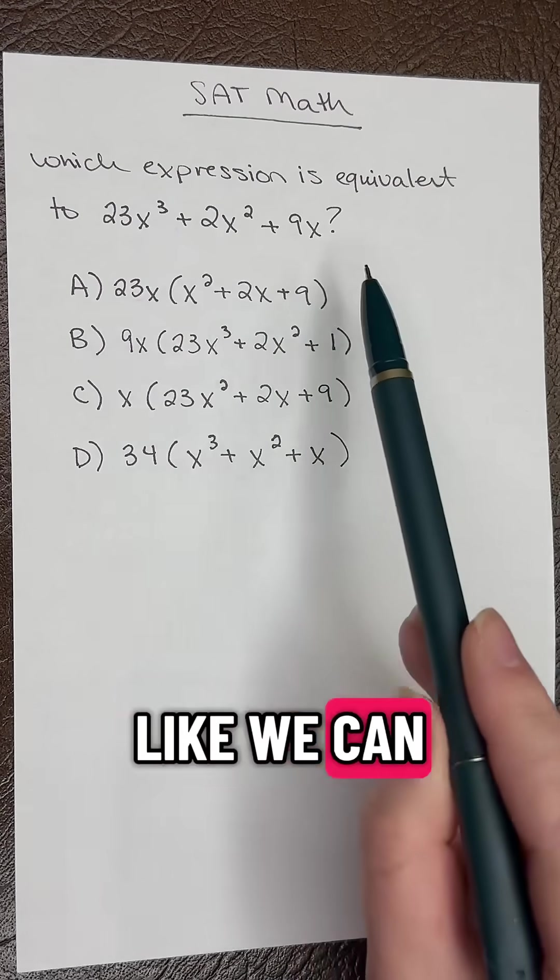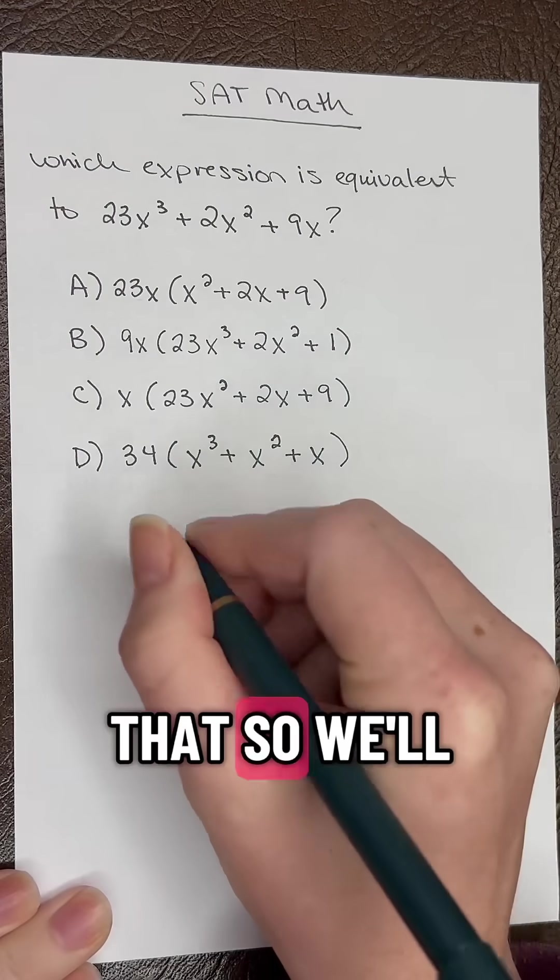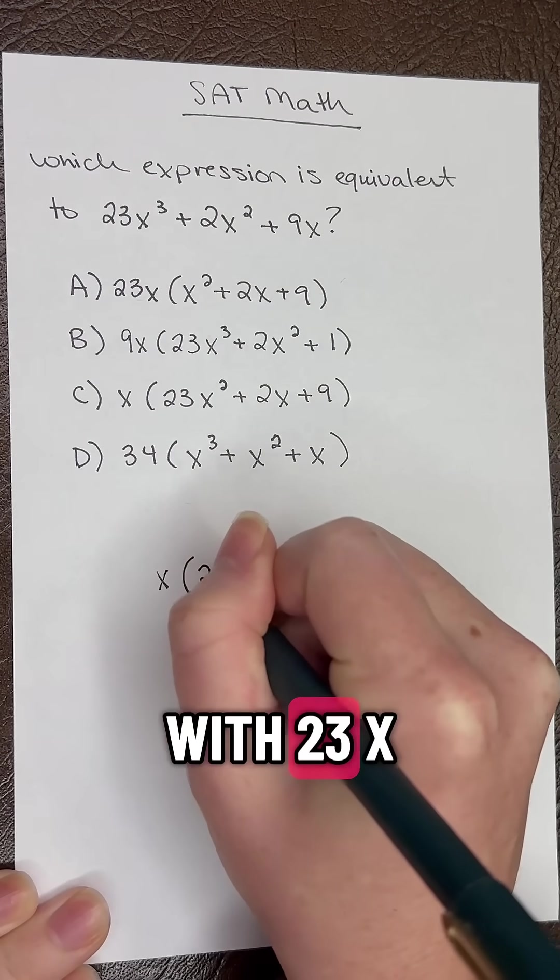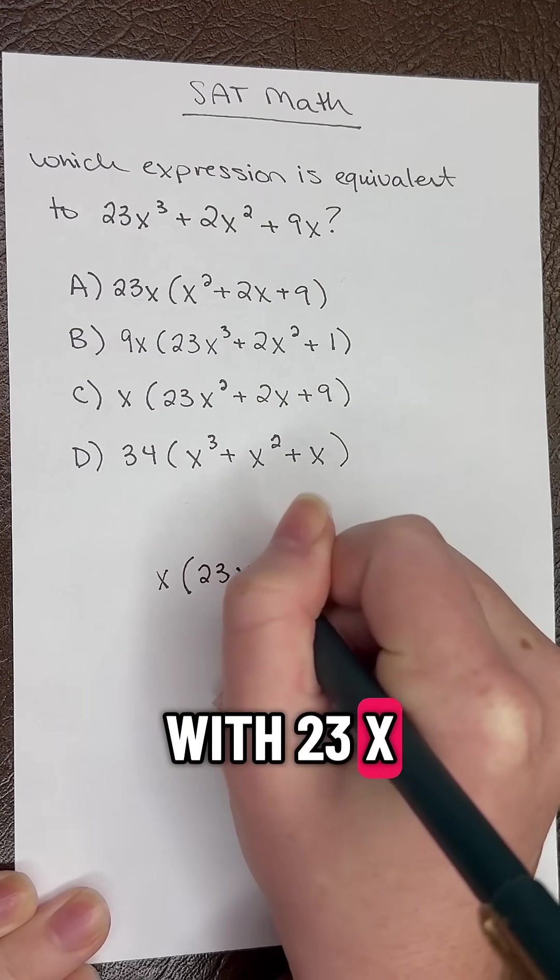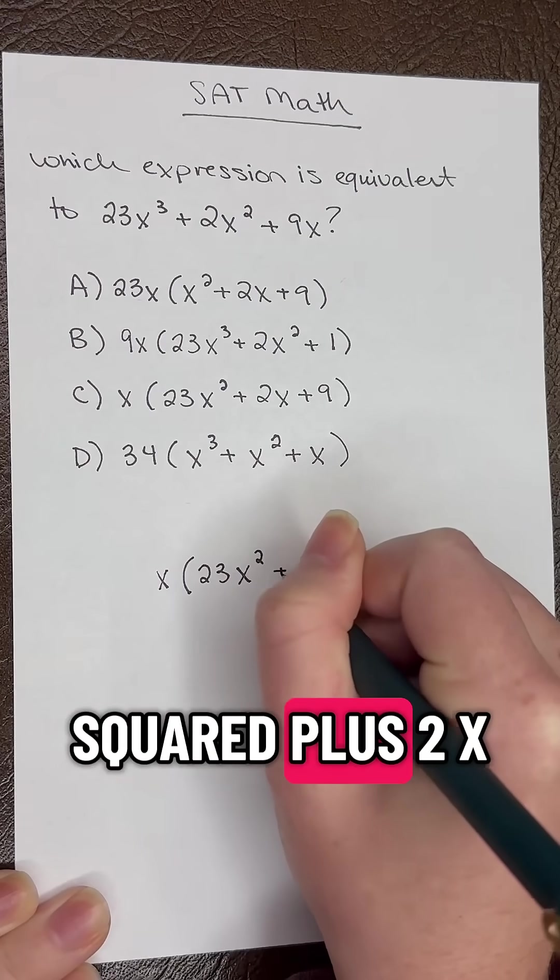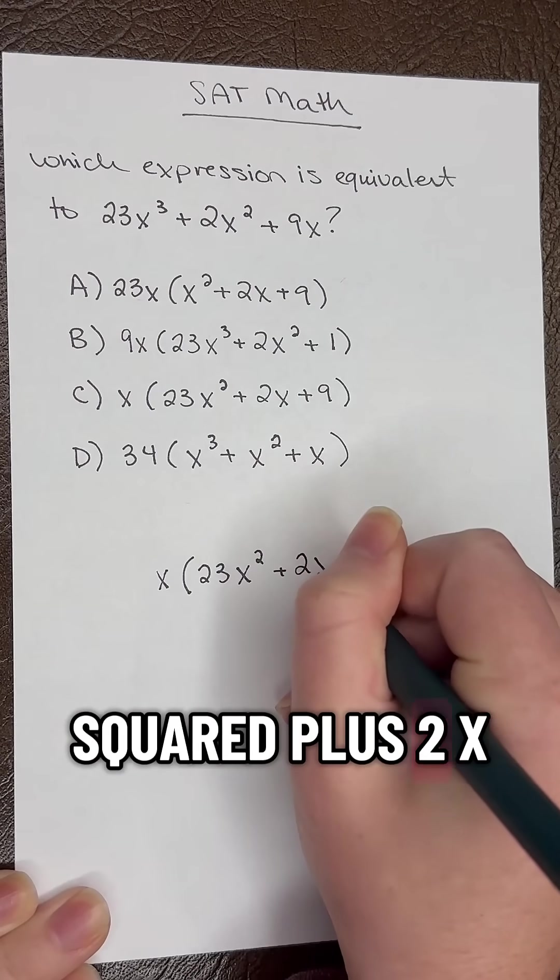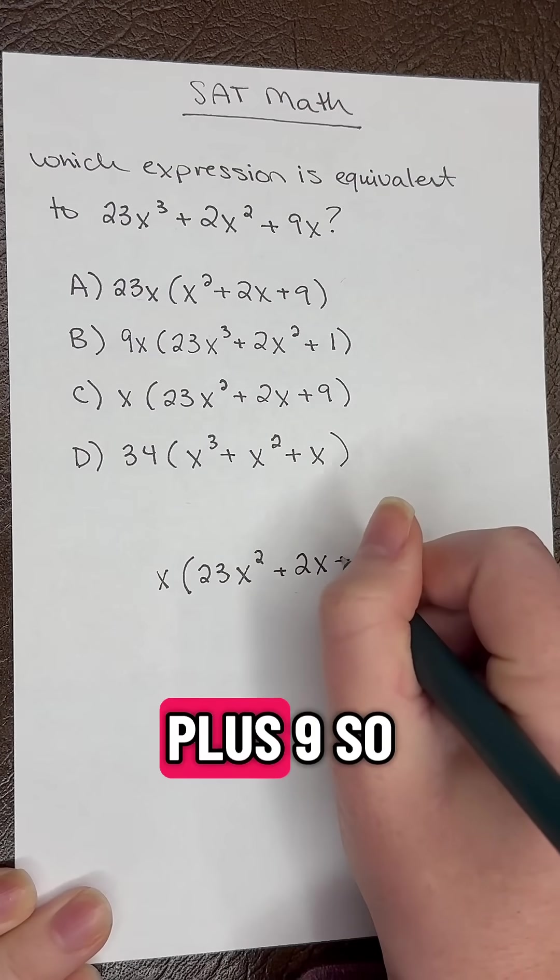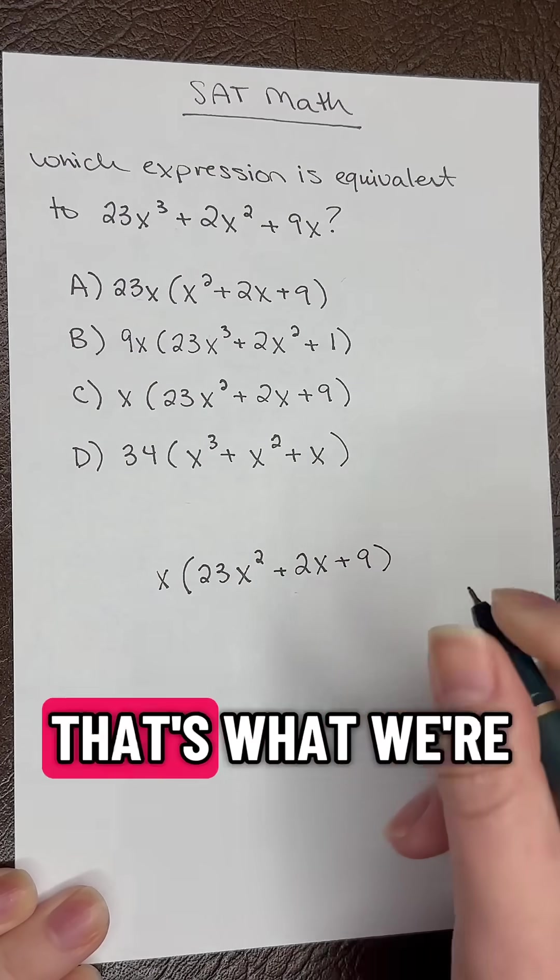It looks like we can take out an x, so let's do that. We'll write x outside the parentheses, then we're left with 23x squared plus 2x, because we're pulling the x out of each of these terms, plus 9. So that's what we're left with.